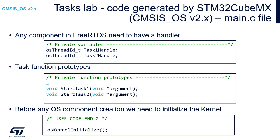Let's have a closer look at the code generated by STM32CubeMX or CubeIDE. Open main.c. From the top, within the private variables we can see the declaration of two handlers for the tasks we specified in the configurator. Within the private function prototypes we can see declarations of two functions assigned to those tasks. Both functions return nothing and accept an argument as a pointer to void. We won't pass arguments in this exercise, but it's worth remembering that option exists.